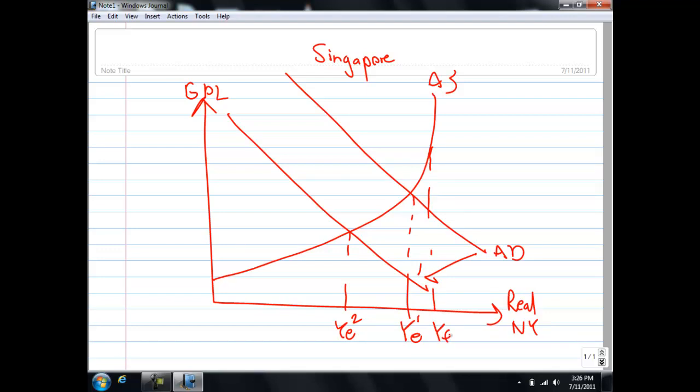As you can see, the gap between our equilibrium income and our full employment income has gone up. This shows an increase in cyclical unemployment.